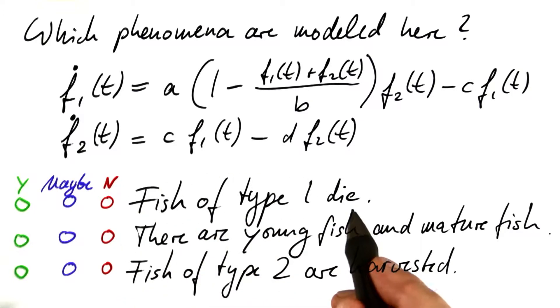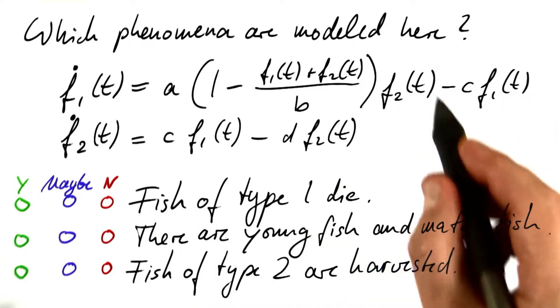Let's consider the first one. Do fish of type 1 die? This expression pretty much looks like it.